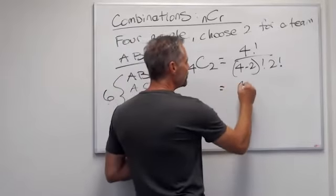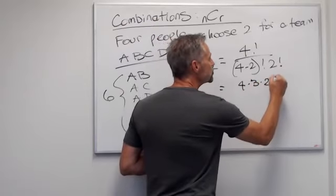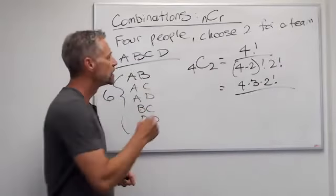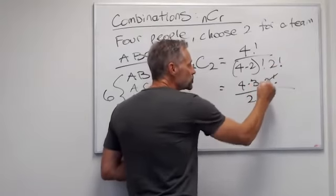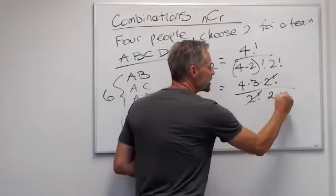But notice on top, I've got four factorial. Let's call that four times three times two factorial. Again, I explained that in my factorial video. The bottom, this four minus two is two factorial. This will just cancel it with that two factorial. This two factorial, let's write it out. It's two times one.